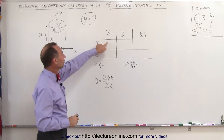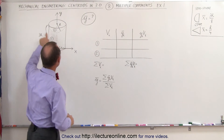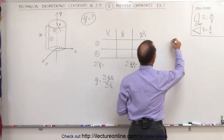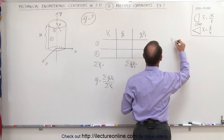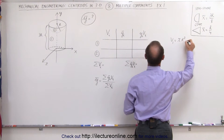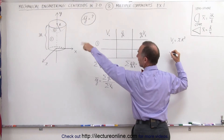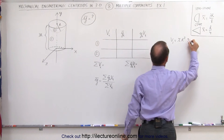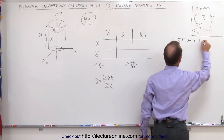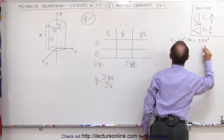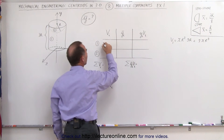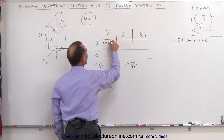First of all, we need to find the volume of shape number one, which is a cylinder. Volume number one equals the area of the base, which is pi r squared, times the height. The height in this case is three times r. So the volume of the cylinder would be three pi r cubed.